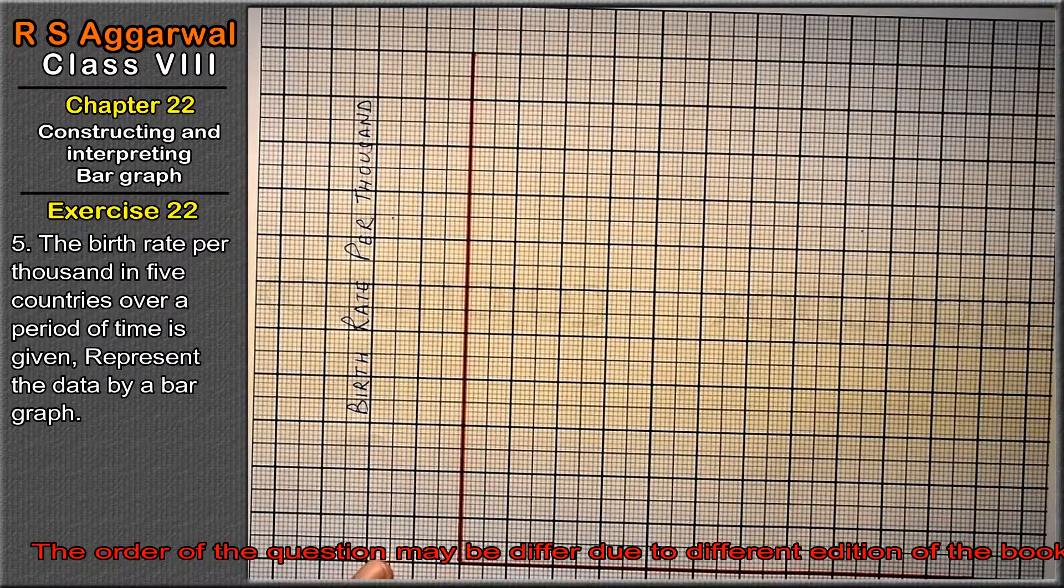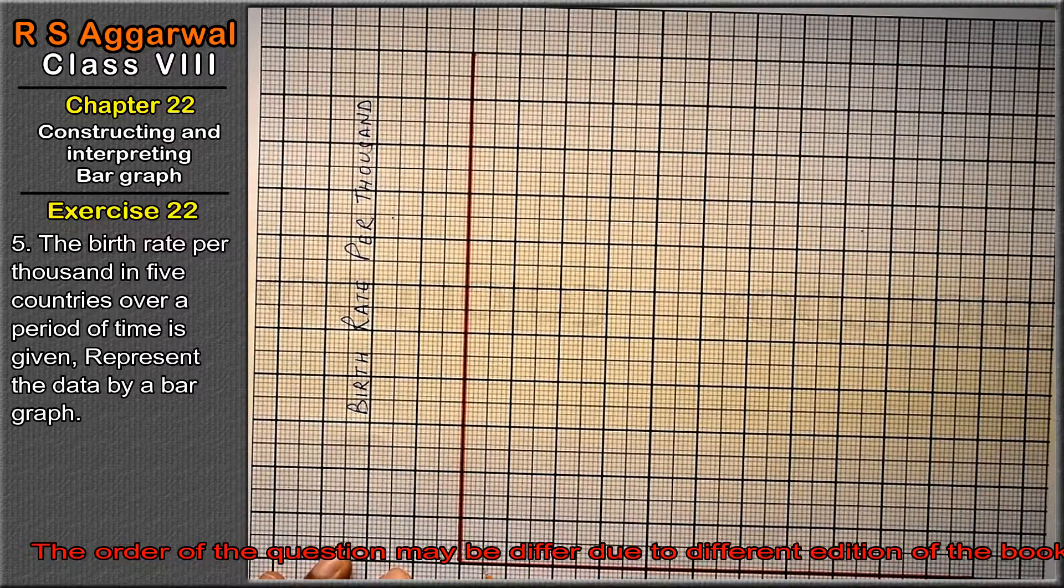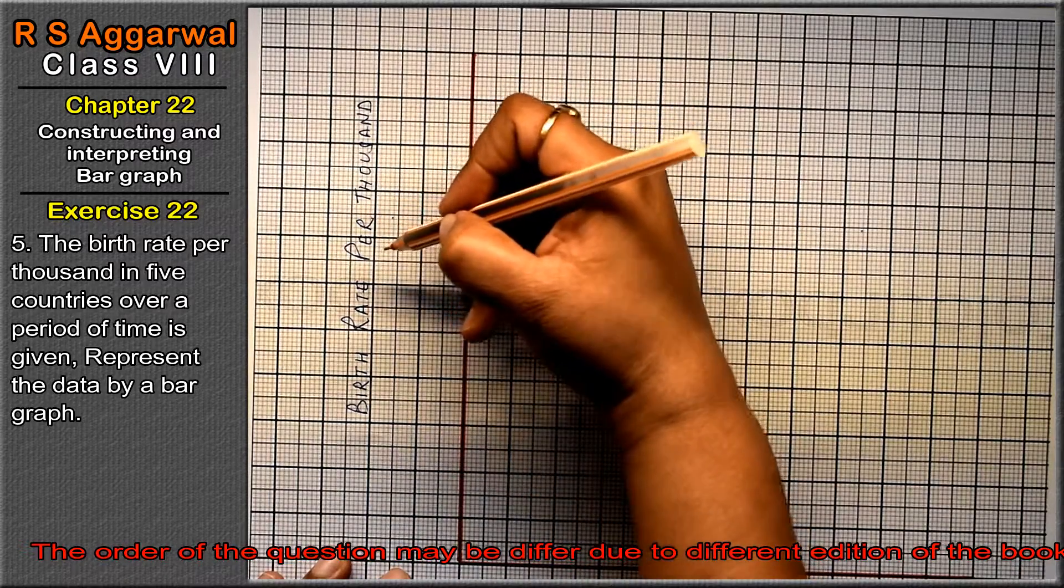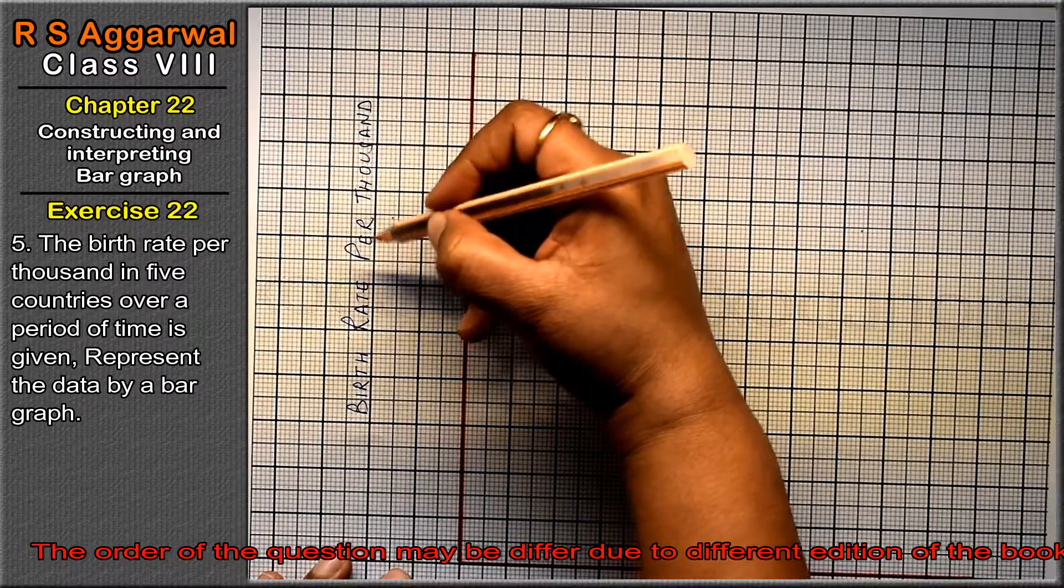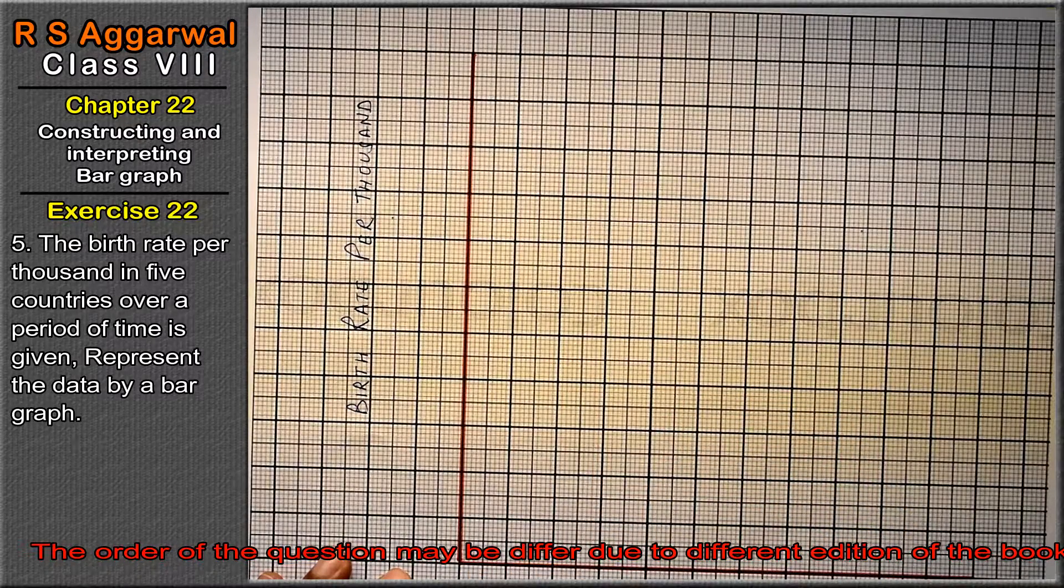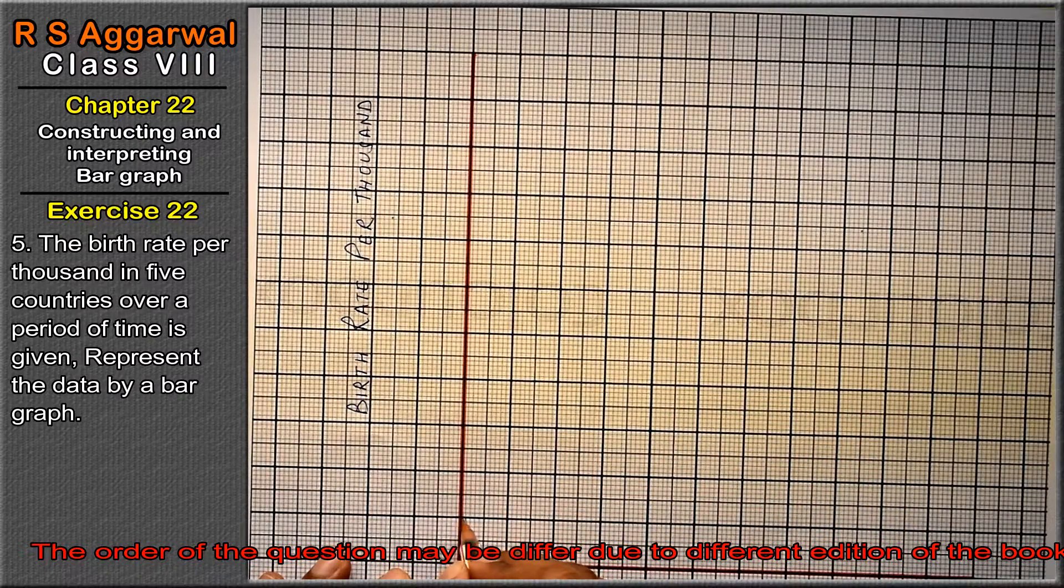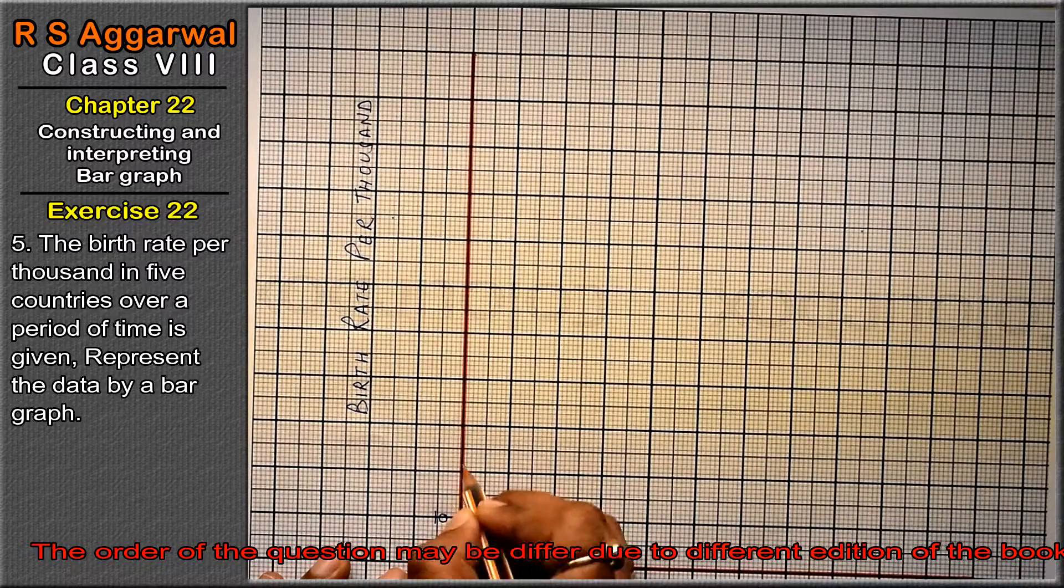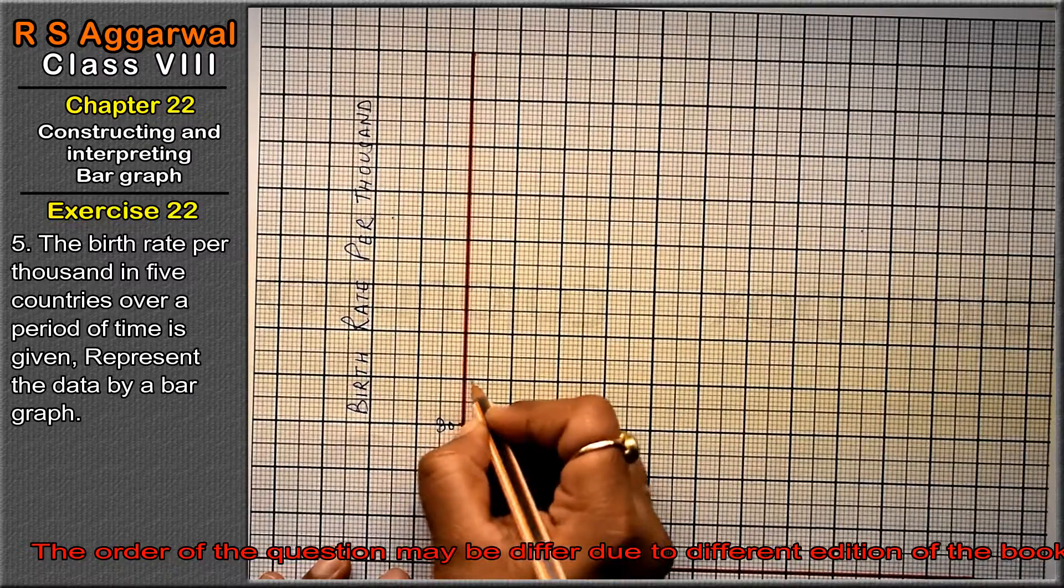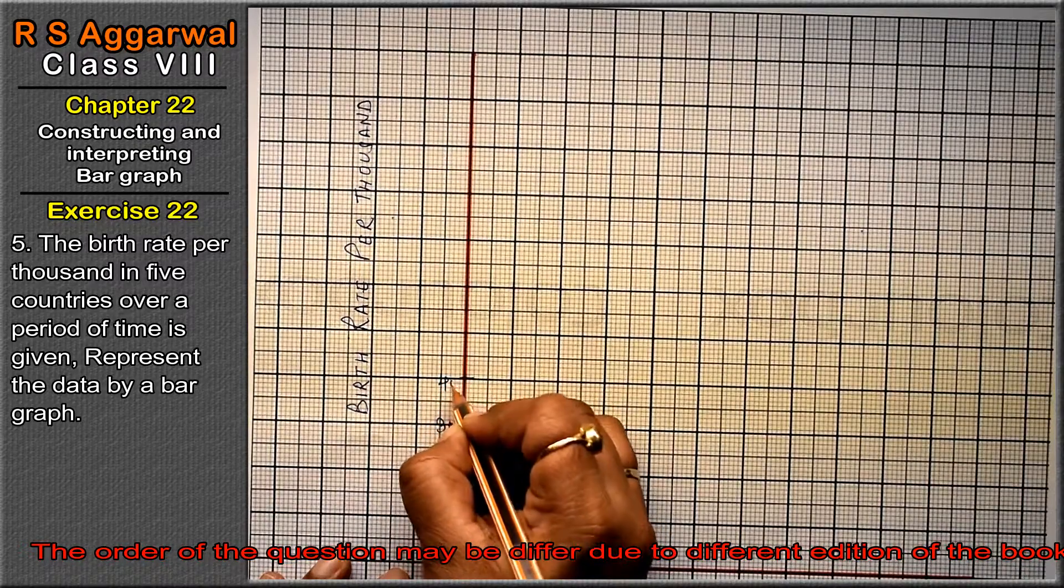Now, we have one block equals 1,000, because per thousand means China is 42 thousand, so one block is 1,000. So here we have 10, 20, 30, 40, 50.